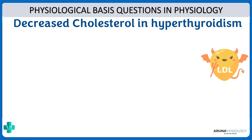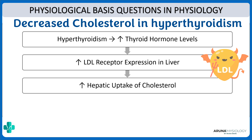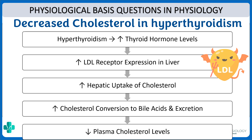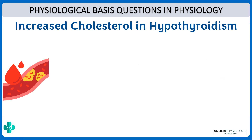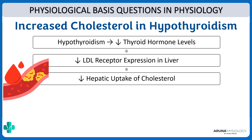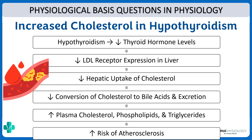What about decreased cholesterol in hyperthyroidism? Whenever there is increased thyroid hormone levels there will be increased LDL receptor expression in the liver. It is normally thyroid hormone that stimulates LDL receptor expression in the liver. So increased thyroid hormone means increased LDL receptors, which means increased hepatic uptake of cholesterol. Not only that, increased cholesterol will be excreted in the form of bile acids, and thus there would be a decrease in plasma cholesterol levels. Conversely in hypothyroidism there would be decreased LDL receptor expression, decreased hepatic uptake of cholesterol, decreased excretion, and thereby increased plasma cholesterol — putting patients at increased risk of atherosclerosis. This is because of the effect of thyroid hormone on fat metabolism.